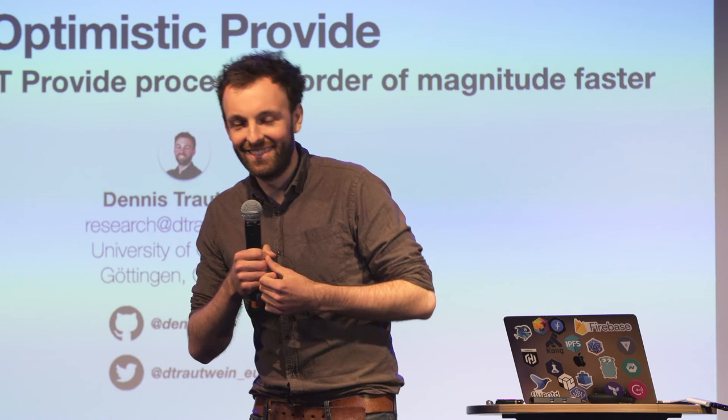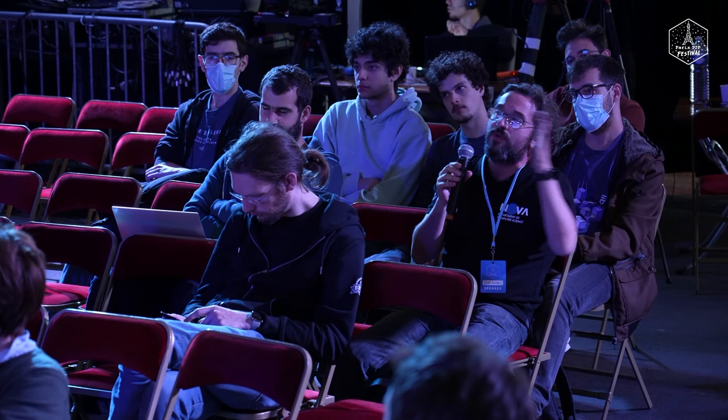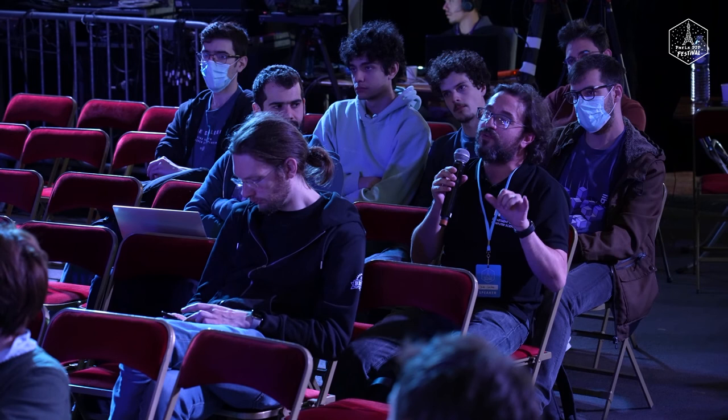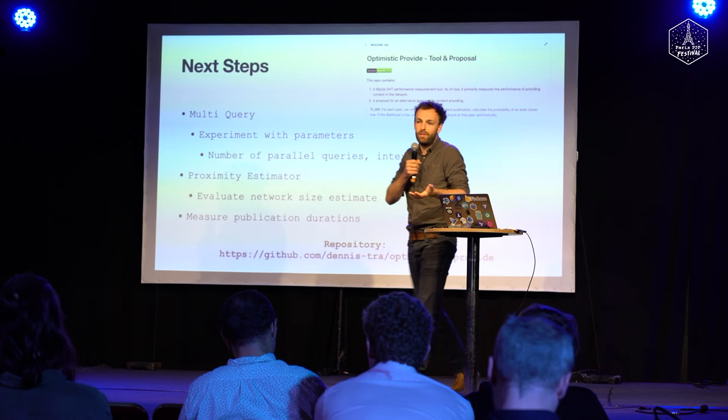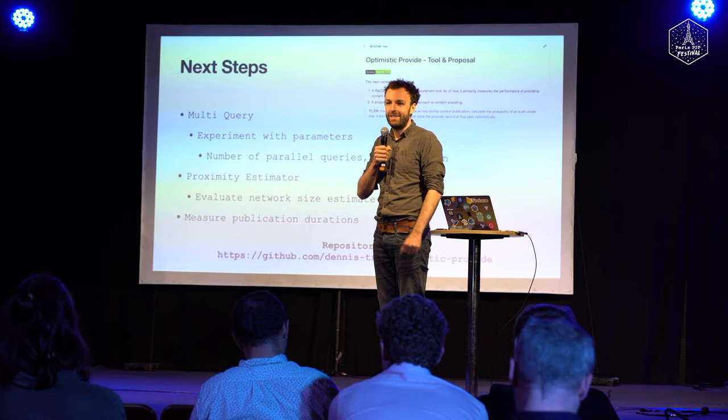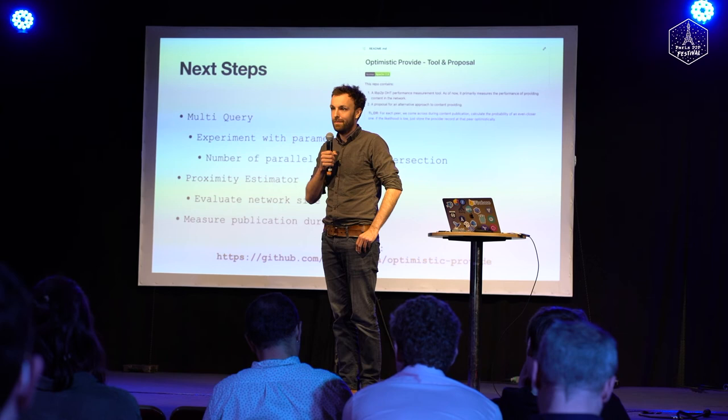Q: When you start two queries from different points and find an intersection of 10, why not go for all 30? A: That's a natural evolution of the first measurement — run three or four queries and also tweak the intersection size. Absolutely, that's one of the parameters we'd experiment with.